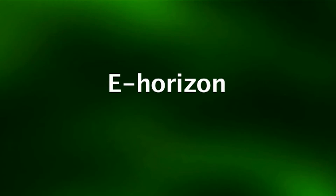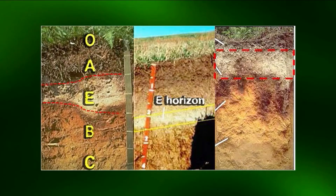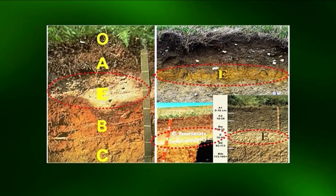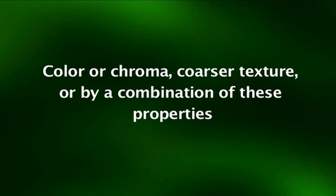The E horizons are eluviated mineral horizons formed by the loss of silicate clay, iron, aluminium, or some combination of these, leaving a concentration of sand and silt particles. These horizons exhibit obliteration of all or much of the original rock structure and are generally found in older, well-developed soils. An E horizon is most commonly differentiated from an underlying B horizon by color or chroma, coarser texture, or by a combination of these properties.